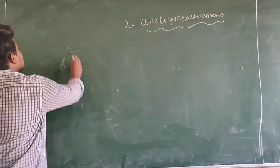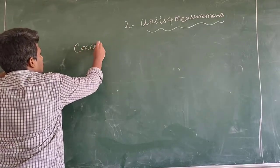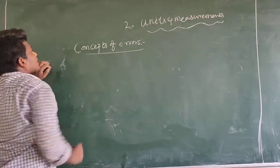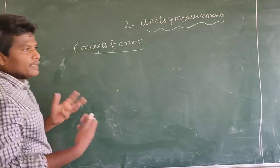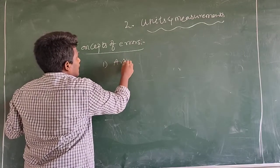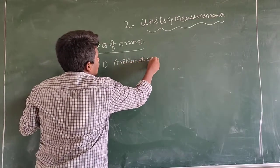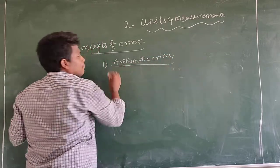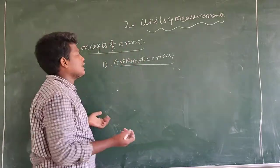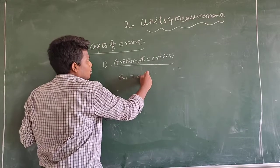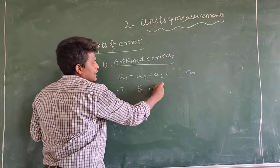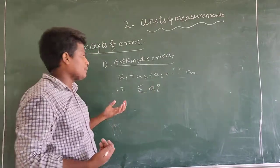Some concepts of errors. Error has different types of concepts. First one: arithmetic error. There are a number of errors — many errors, many instruments, many error values. For example, A1, A2 plus A3 up to so on. That is arithmetic error, also called mathematical error.